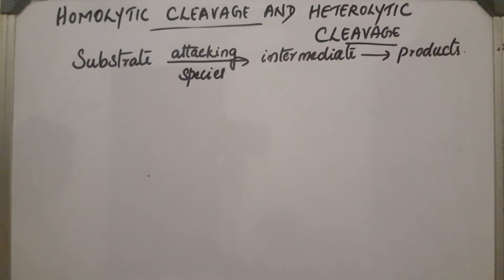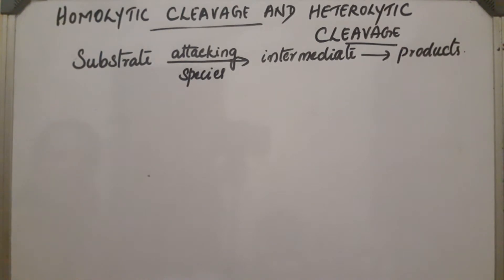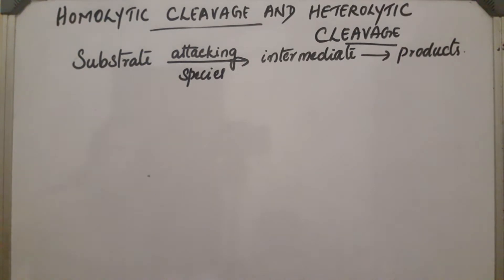In organic reactions, the substrate or organic compound reacts with an attacking species and forms intermediates. These intermediates are highly unstable and get converted into products. During this process, bond cleavage takes place. There are two types of bond cleavages: homolytic cleavage and heterolytic cleavage.